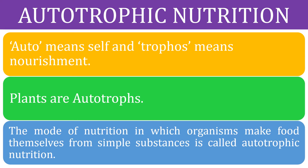Autotrophic nutrition — 'auto' means self and 'tropos' means nourishment. Plants are autotrophs. The mode of nutrition in which organisms make food by themselves from simple substances is called autotrophic nutrition.